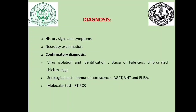Diagnosis is based on history, clinical signs and symptoms, and age of affected birds. Necropsy examination may reveal hemorrhages in the bursa of Fabricius, hemorrhages in skeletal muscle, and swollen kidney with urates. For confirmatory diagnosis, virus isolation and identification is performed; the bursa of Fabricius is the best source, and virus can also be isolated from embryonated chicken eggs. Serological tests include immunofluorescent test, agar gel precipitation test, viral neutralization test, and ELISA.